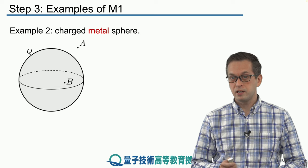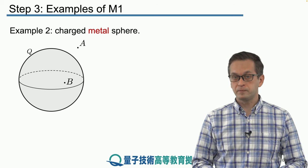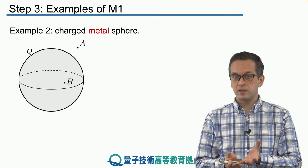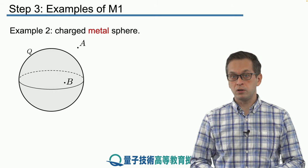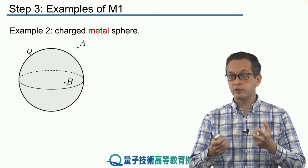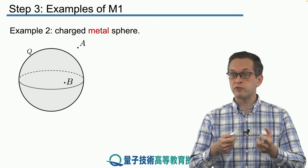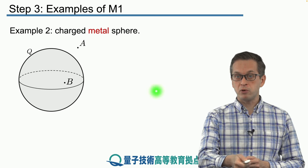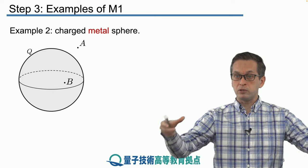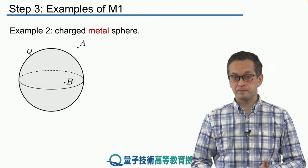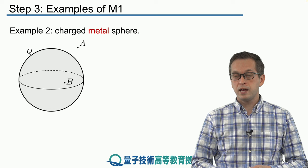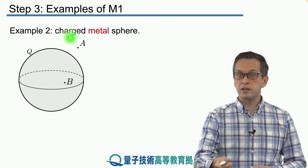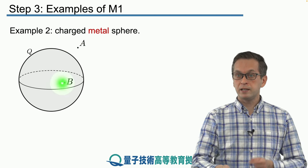Now consider a different case: a charged metal sphere. Before, we were considering the surface to be some fictitious surface in free space. But now we have a physical metal sphere and we distribute charge all on this sphere. Metals have lots of free charge that is free to move, so if we place some charge Q on the sphere, it will automatically distribute uniformly over the entire surface. We want to know what's the electric field produced by such a charged metal sphere — in particular, the electric fields and corresponding flux at a point A outside of the sphere and a point B inside the sphere.